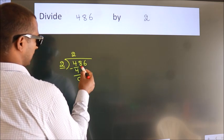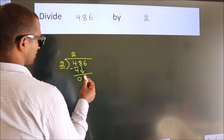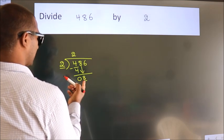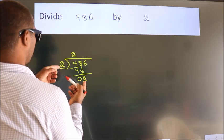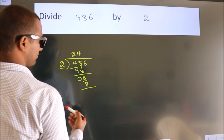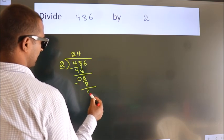After this, bring down the beside number. So 8 down. When do we get 8? In the 2 table. 2 four's 8. Now we subtract. We get 0.